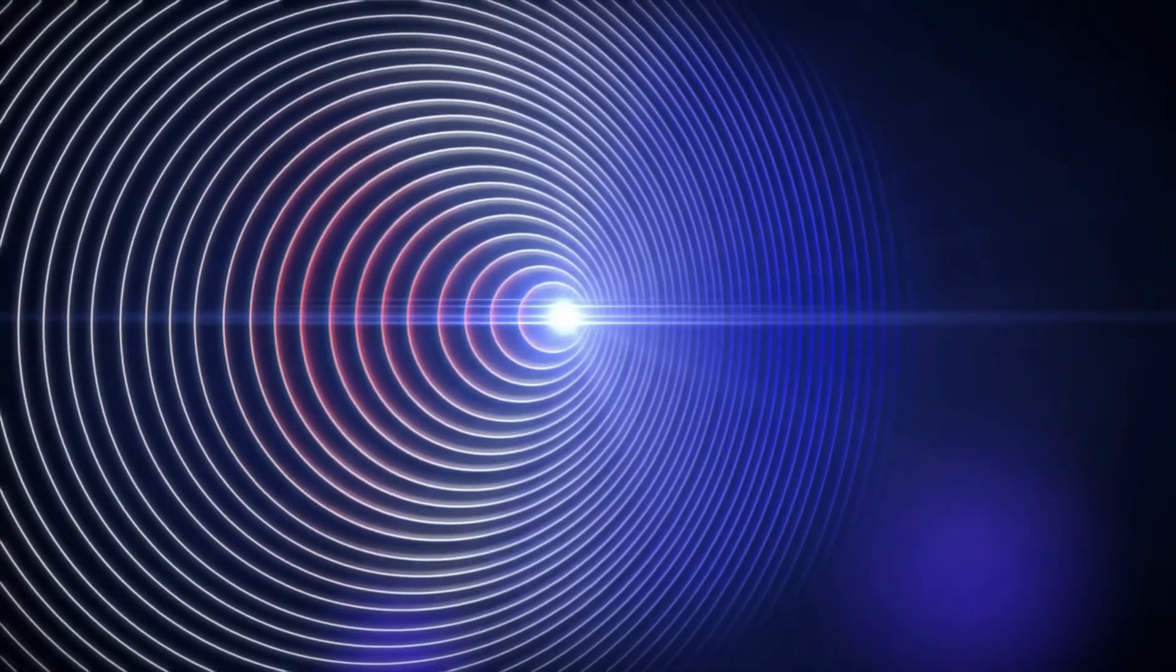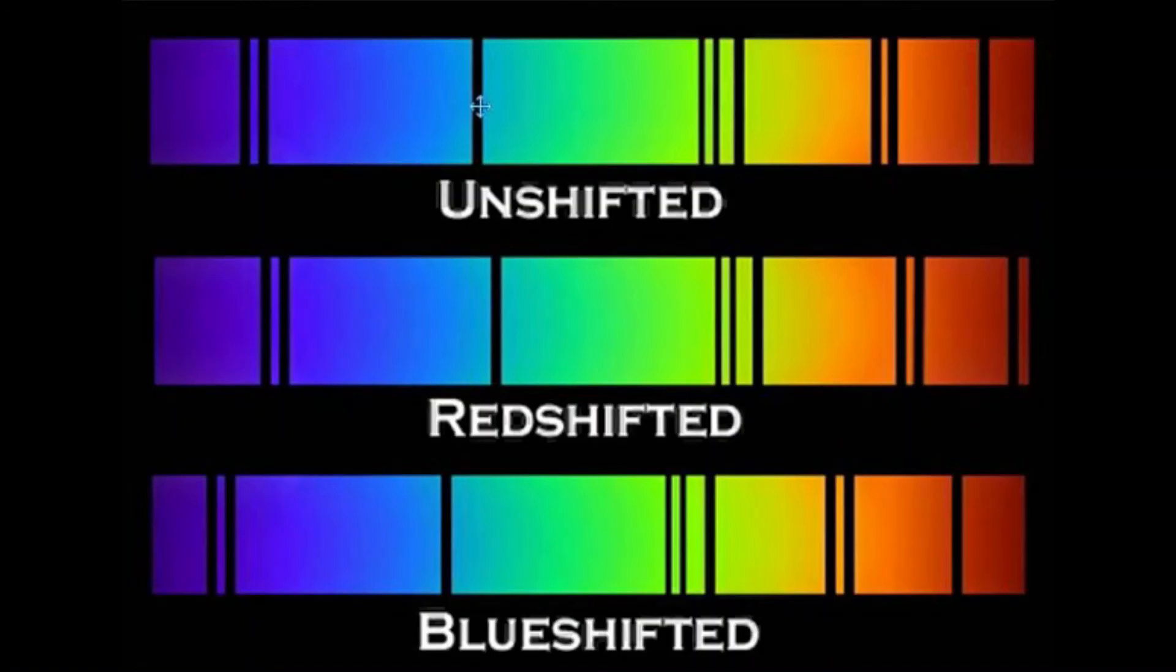Well, light behaves exactly the same. As light waves approach us, they compress and have higher frequencies. And as they move away from us, the light waves elongate and shift into lower frequencies. The short approaching light is called blue shift, while the longer receding light is called redshift.